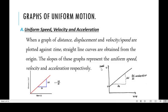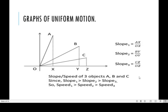So for a distance-time graph the slope is speed; for a displacement-time graph it is velocity. My other graph here is when you plot velocity or speed against time. This one is not starting from the origin — not all graphs start from the origin. The slope of this graph is acceleration, because change in vertical which is velocity over change in horizontal which is time gives you acceleration.